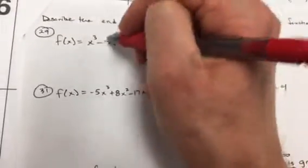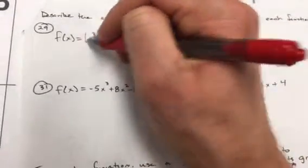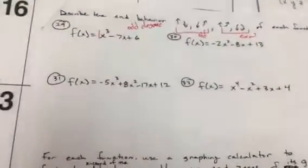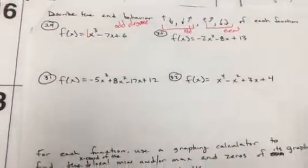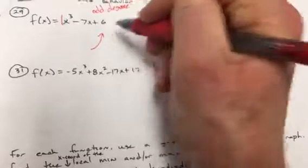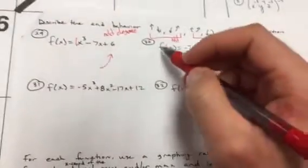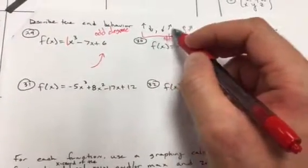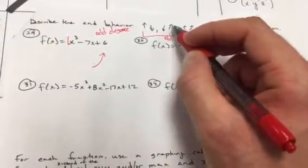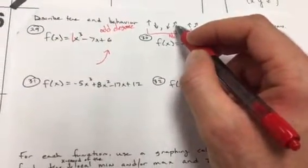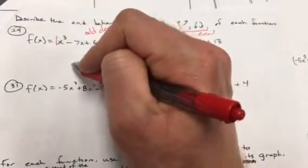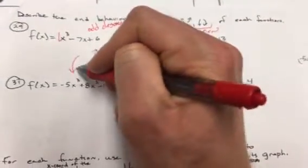The leading coefficient is positive 1, so it has a positive leading coefficient — that means it's going to end by going up. But because it's odd degree, the other end has to be opposite, so it's going to begin going down — going south.